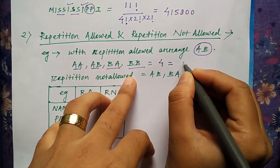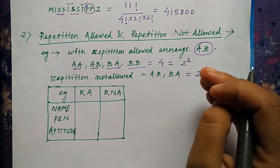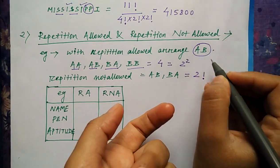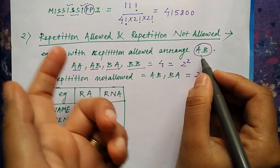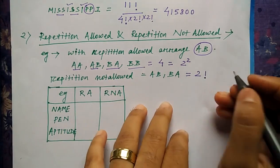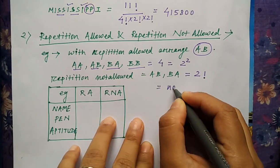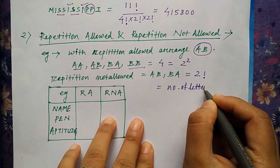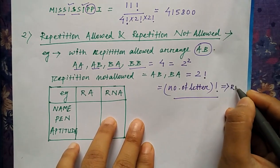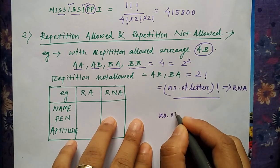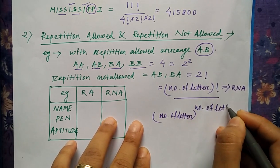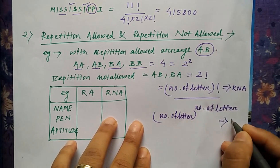So how is 4 related to 2? It is 2 to the power 2. The same way: wherever repetition is not allowed, it will be the number of letters factorial; and wherever repetition is allowed, it will be the number of letters to the power the same number of letters. So: number of letters factorial for repetition not allowed, and number of letters to the power number of letters for repetition allowed.